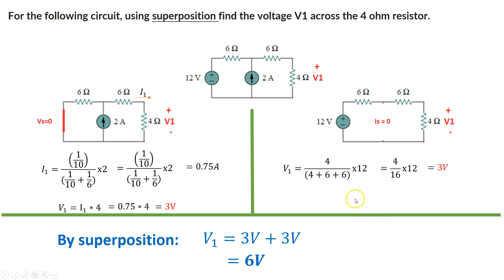So that's how we calculate the voltage V1 across the 4 ohm resistor using the superposition principle.